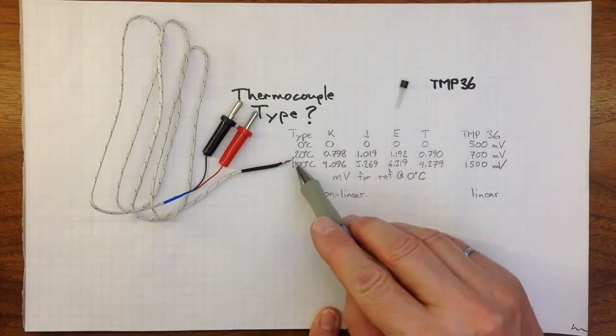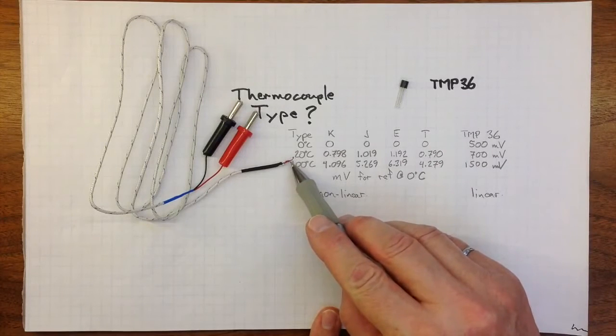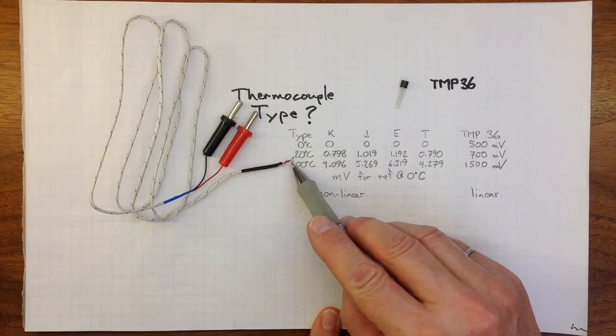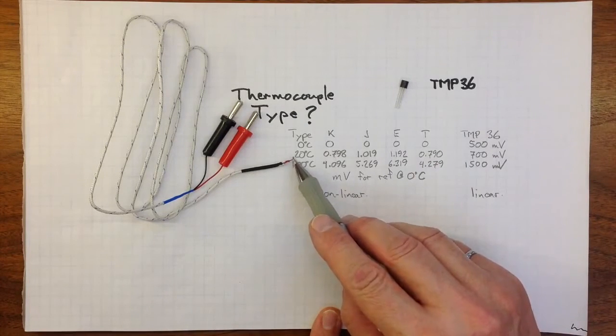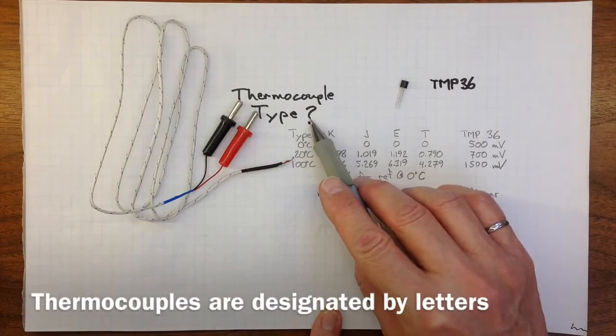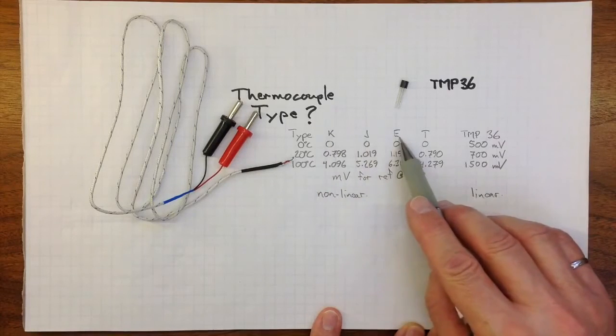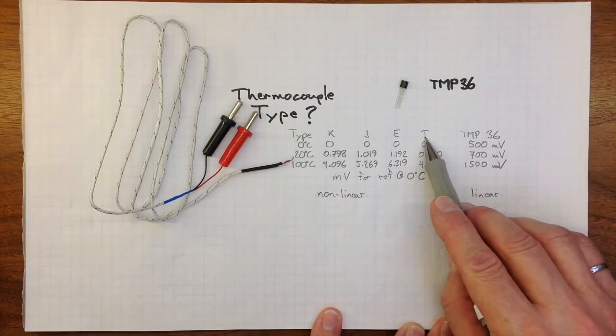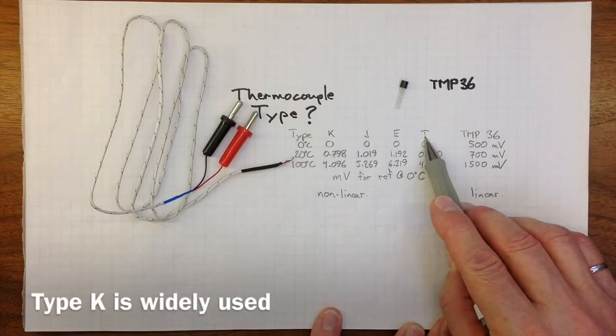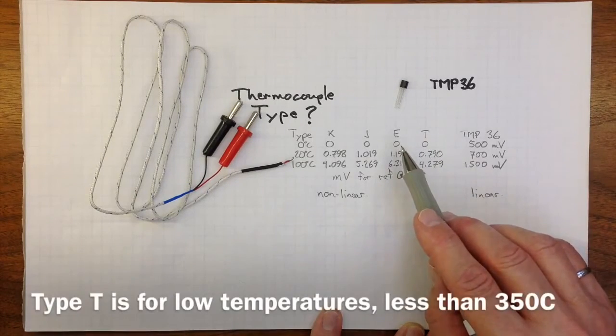We've got a thermocouple, which is this tiny little joint here between two pieces of wire made out of different metals. We're not sure what type of thermocouple this is. It could be a type K or a J or an E or a T, and you can find out more about those from your textbook or from looking up the Omega website through D2L.